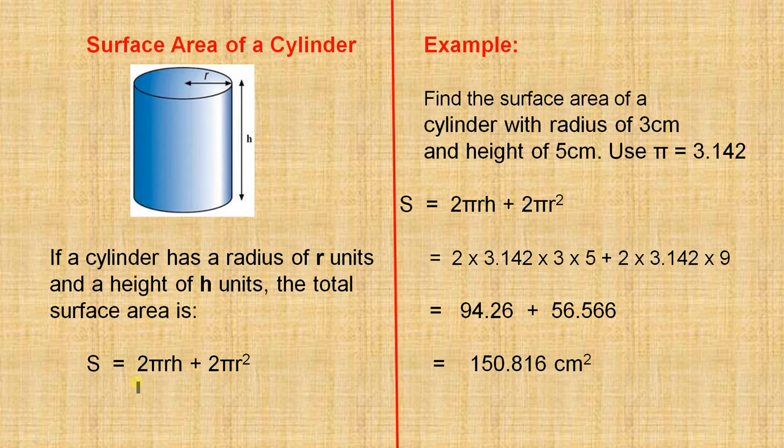Now 2 pi r h represents the surface area of the curved surface. 2 pi r squared represents the surface area of the base and the circle at the top. There are two circles, that's why it's 2 pi r squared. When you add those two together, that gives you the total surface area.